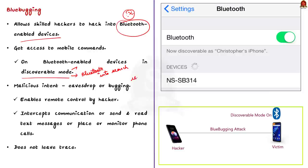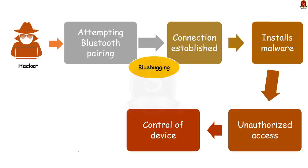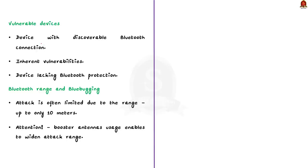Since they have remote control of the device, hackers may send and read text messages, and place or monitor phone calls — most importantly, without leaving a trace. A hacker attempts to pair with the victim's device via Bluetooth, and once a connection is established, the hacker installs a backdoor or malware to bypass authentication. The malware then gains unauthorized access by exploiting a vulnerability. A device with discoverable Bluetooth connection is vulnerable to blue bugging attack. Blue bugging can vary from one device to another since it depends on inherent vulnerabilities.